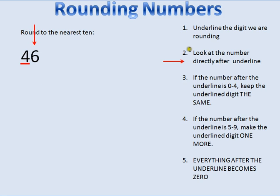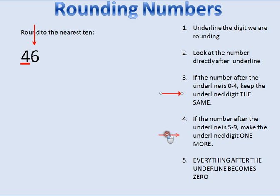Now if the number is zero, one, two, three, or four, we keep this digit the same. But it's not zero, one, two, three, or four, so I'm going to go down to the next rule.